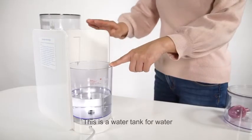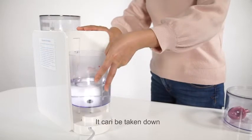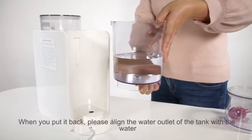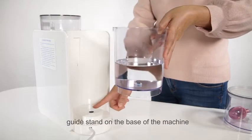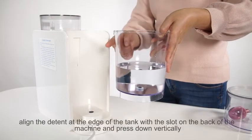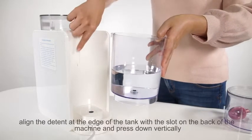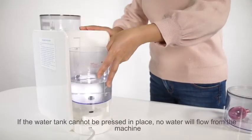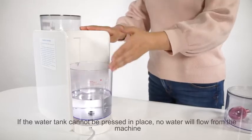This is a water tank for water. It can be taken down. When you put it back, please align the water outlet of the tank with the water guide stand on the base of the machine. Align the detent at the edge of the tank with the slot on the back of the machine and press down vertically. If the water tank cannot be pressed in place, no water will flow from the machine.